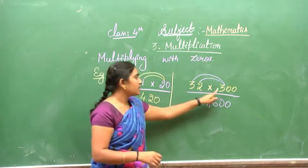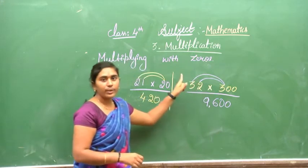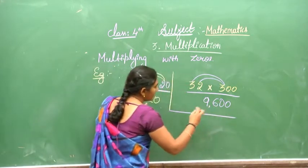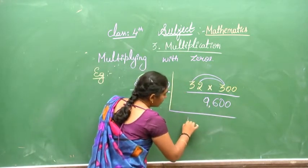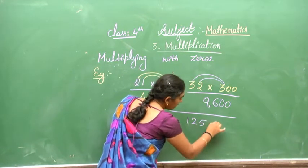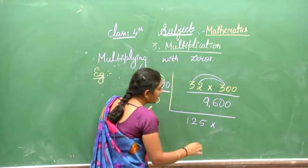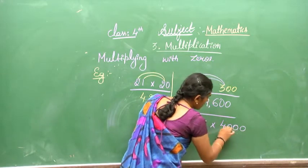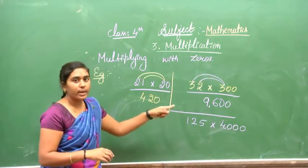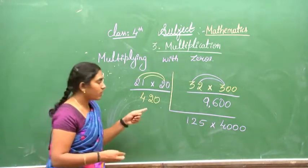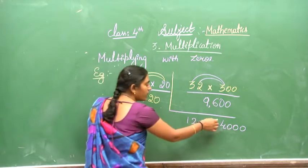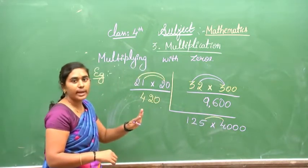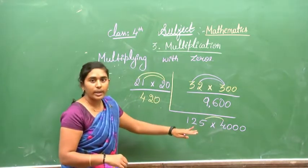Very simple. The rule is: multiply the non-zero digits with the number first, then append the zeros. For example, 125 multiplied by 4,000 — here we first multiply 4 with 125.